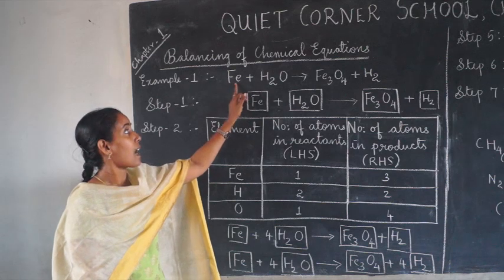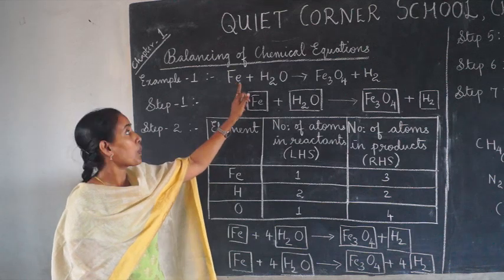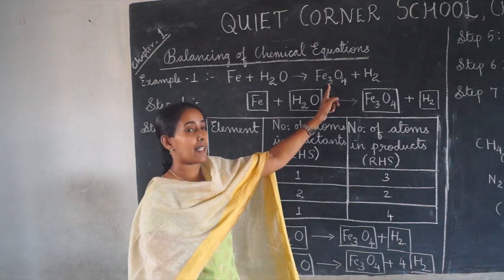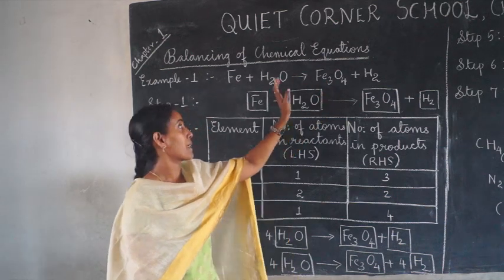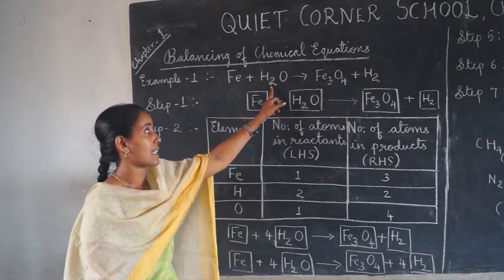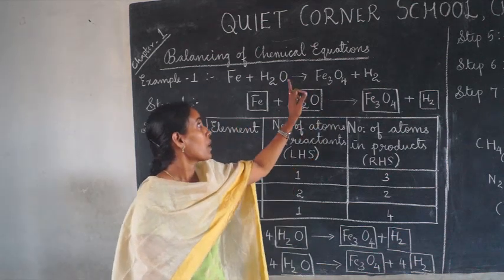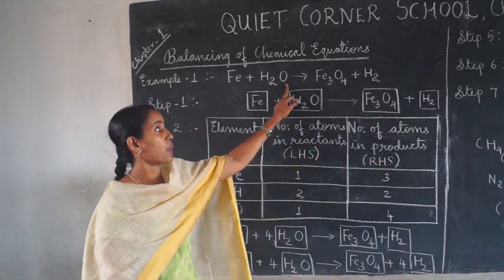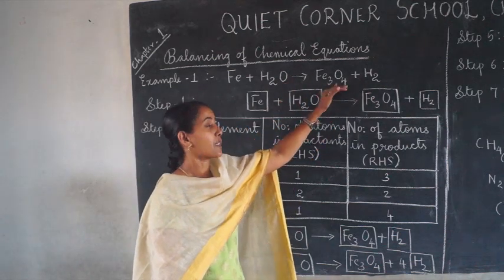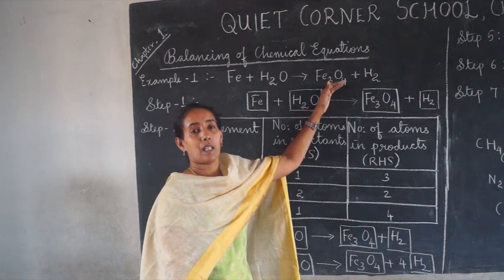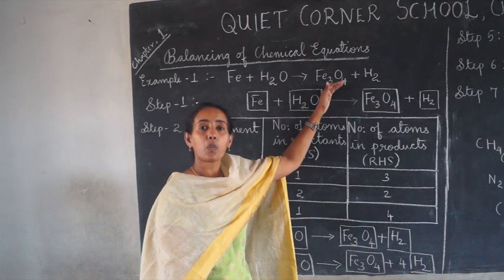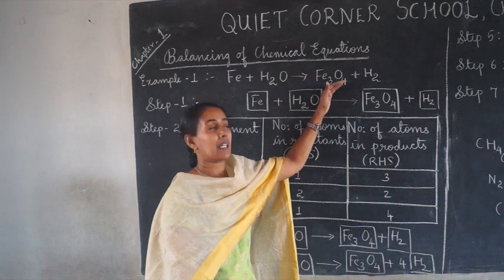For example, here iron has only one atom on the left side but three atoms on the product side. Hydrogen has two atoms on the left-hand side and two on the right. Oxygen has only one on the left but four on the right. So this is not a balanced chemical equation.